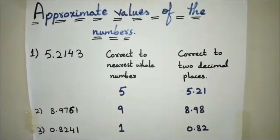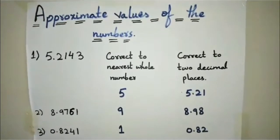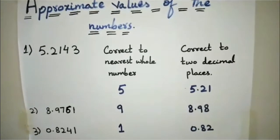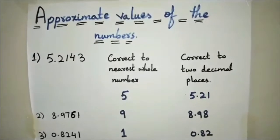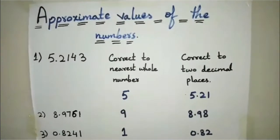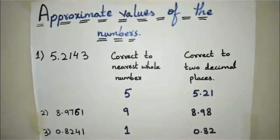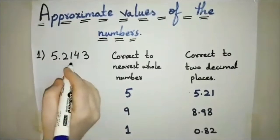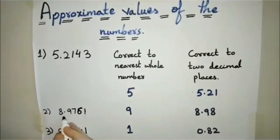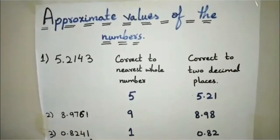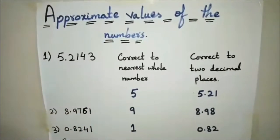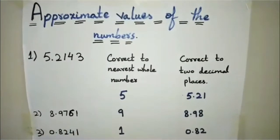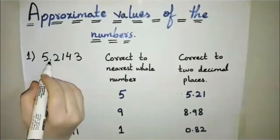If there are too many decimal places in a decimal fraction, it becomes difficult to make mathematical calculations and a lot of time is spent writing them out. It becomes easier if we know how to find approximate values — this is called rounding off to a desired number of decimal places. We have some examples: 5.2143, 28.9761, and 0.8241. We want these decimal numbers as the nearest whole number, so we observe the digit right after the decimal point.